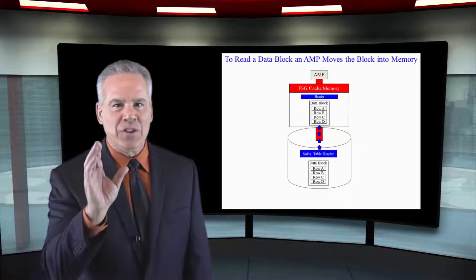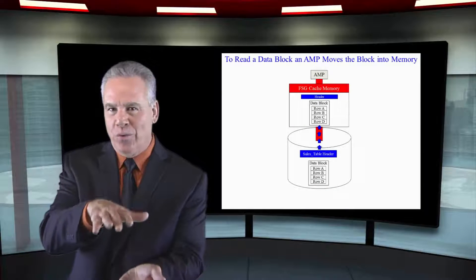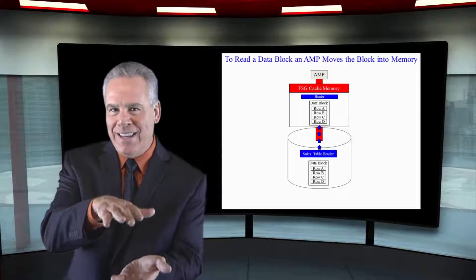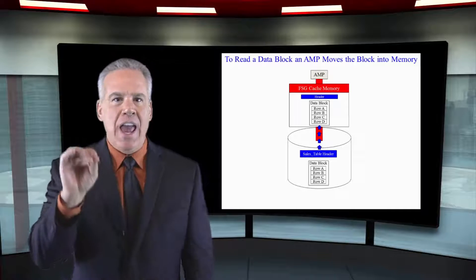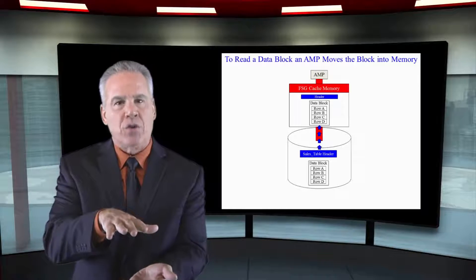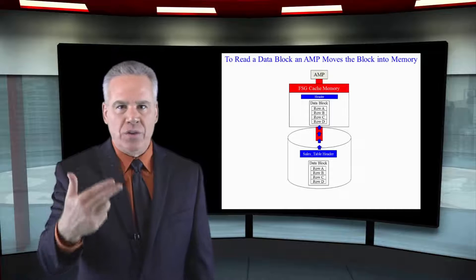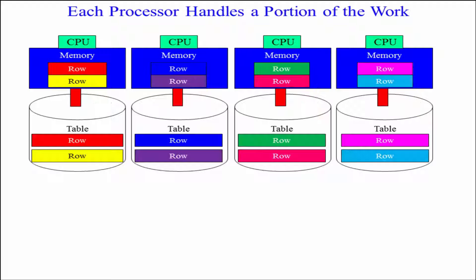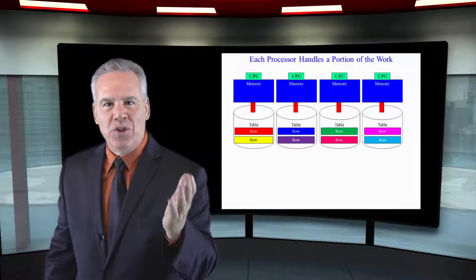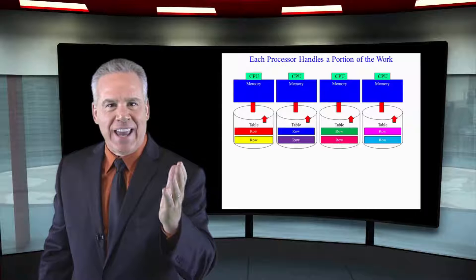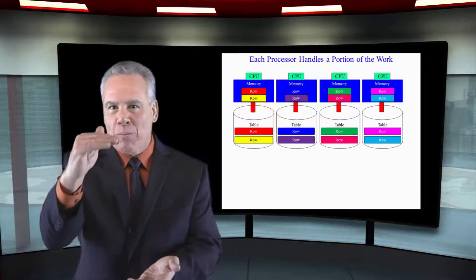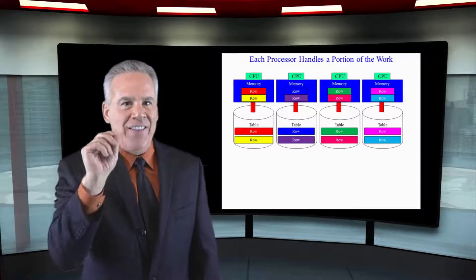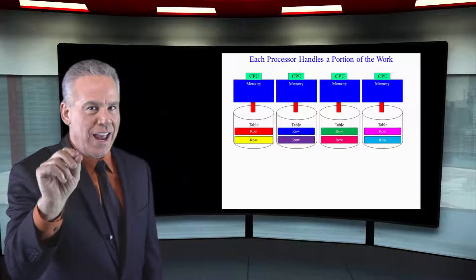Nothing happens on disk but cold storage — they can't even read that data. Every time a block is going to be read, inserted, updated, or deleted, they move that block into the AMP's memory. This is called FSG Cache — File System Generating Cache — and that's where all processing is done.